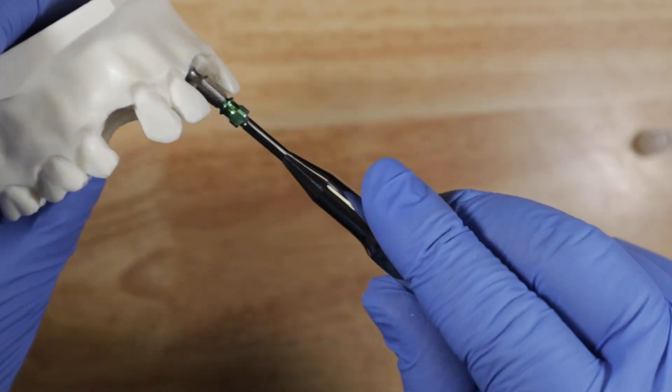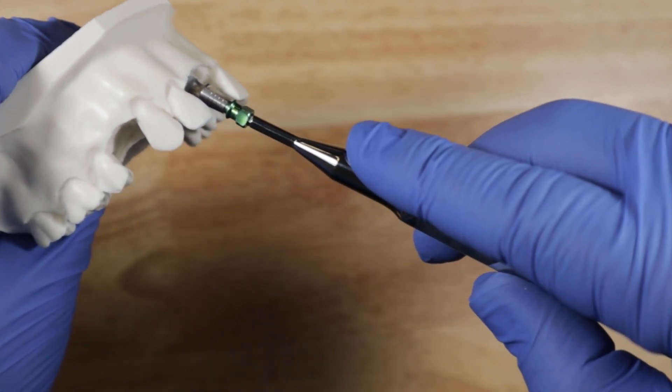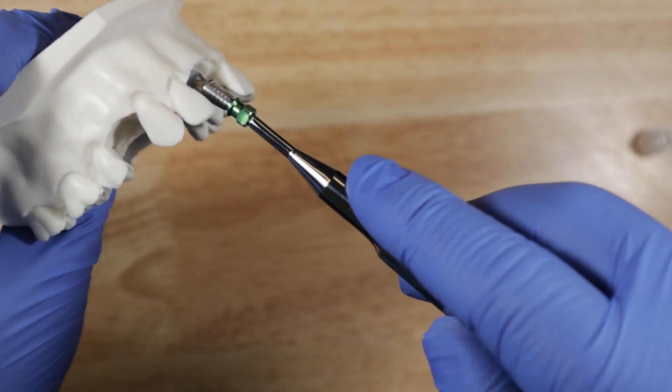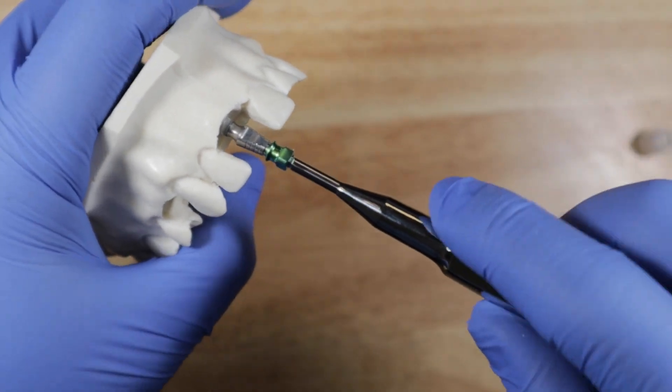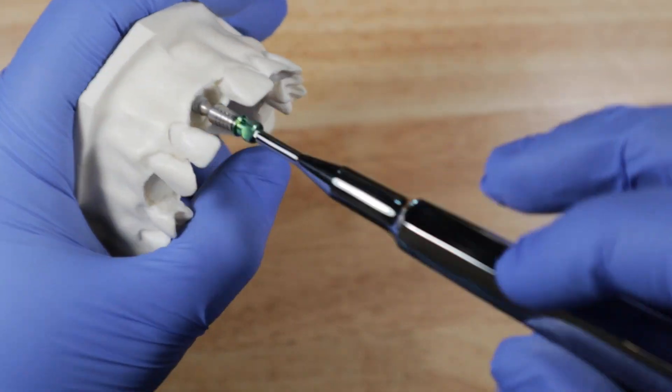So this way you can actually apply pressure buckly, lingually or side to side. So you can use it to apply the pressure as you turn the implant.